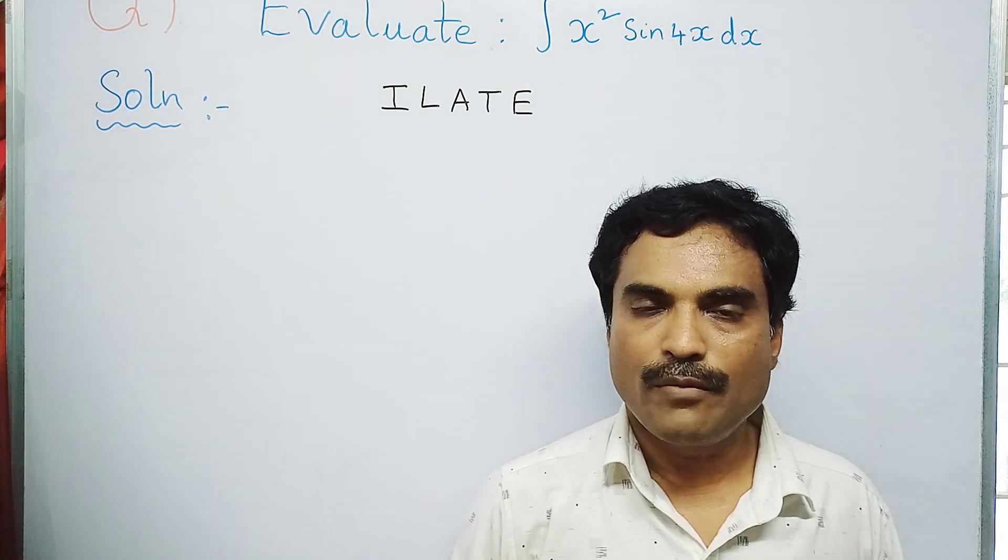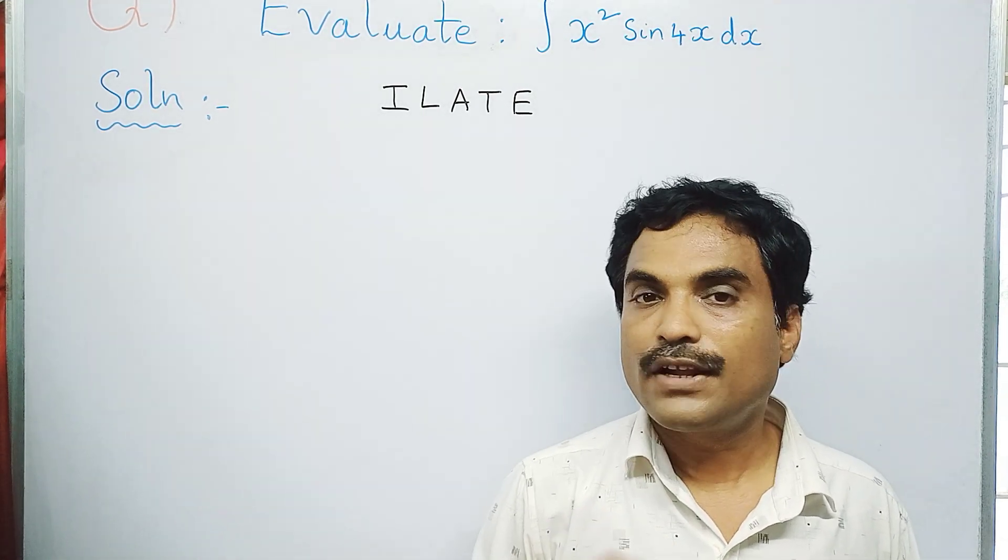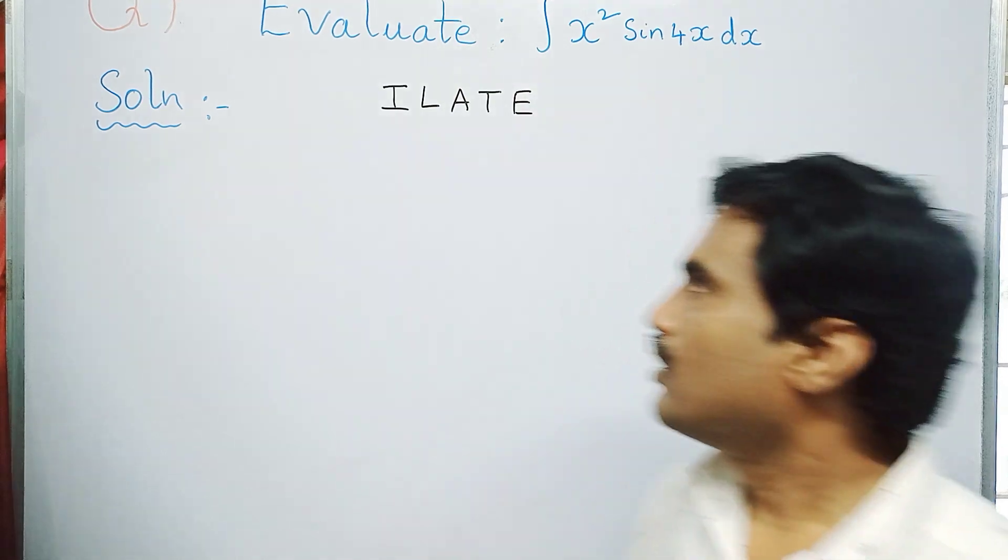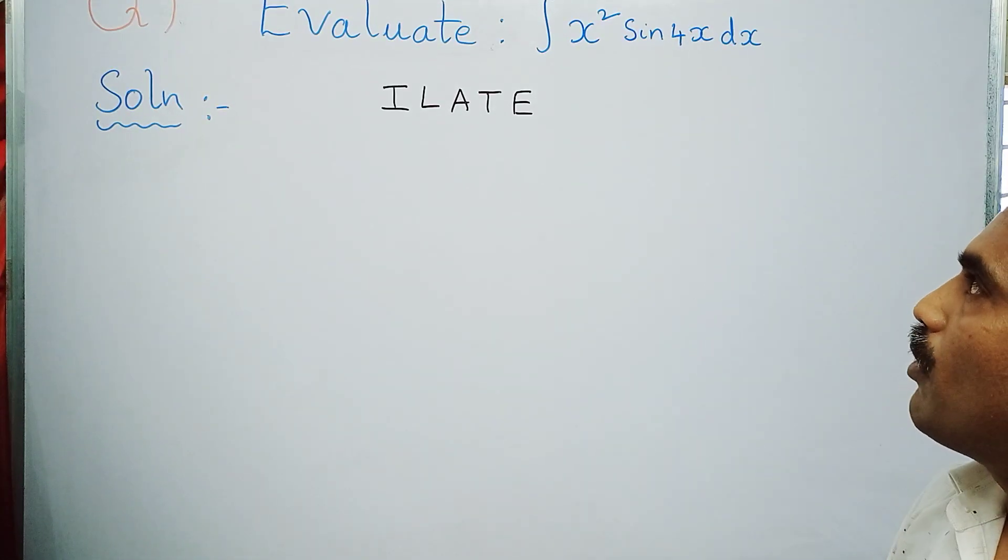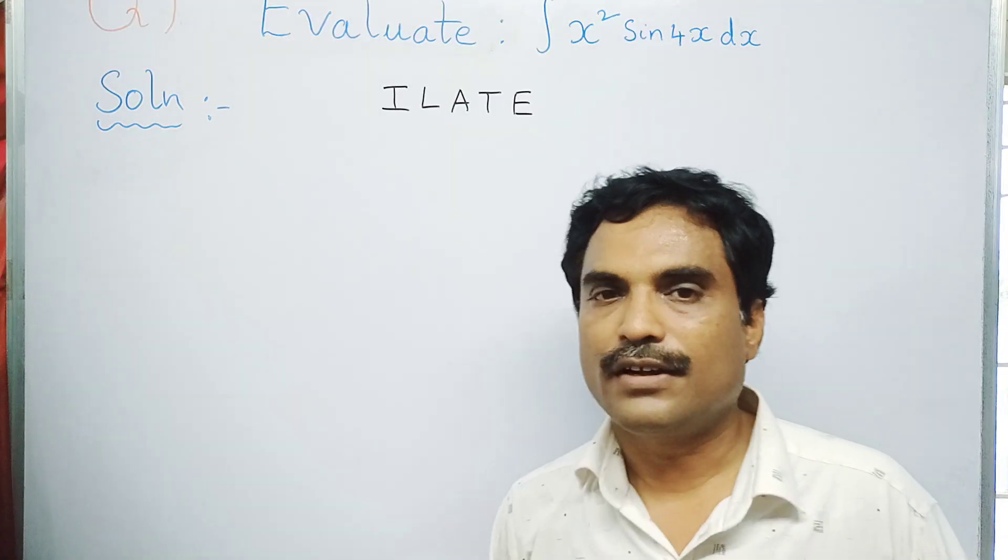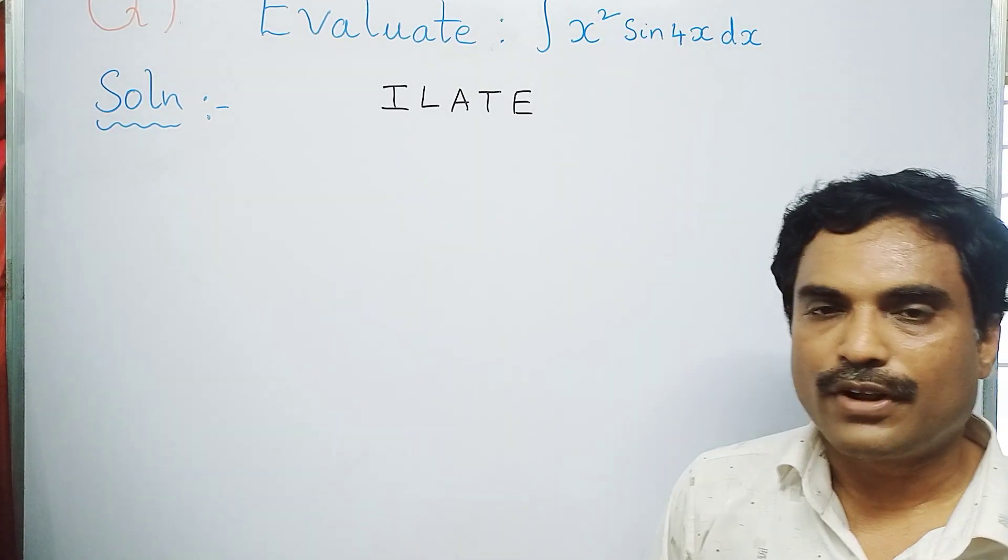Now from the given integrand, you can see here it is a product of two functions. One is x square and another one is sine 4x. Now x square is an algebraic function, so you have to put the tick under the letter A, and sine 4x is a trigonometric function, so you have to put the tick under the letter T.